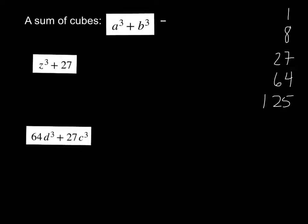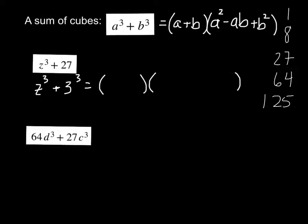Well it gives us a binomial and a trinomial. In the binomial it's whatever was cubed in each one, so a + b just to the first degree. And then in the trinomial it's a² - ab + b². And if you multiply that out you will end up with a³ + b³. Here's our first example. What's cubed in this example? Well z is cubed here on the left and 3 is cubed there on the right.